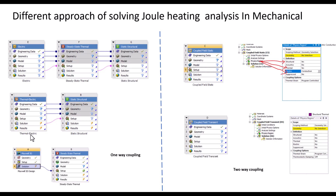The second one-way approach is a thermal-electric system coupled to a static structural. In this case, the thermal-electric is solved in a coupled way, which is helpful when electric properties are a function of temperature. The results are then transferred to the static structural to predict deformation and mechanical stresses.